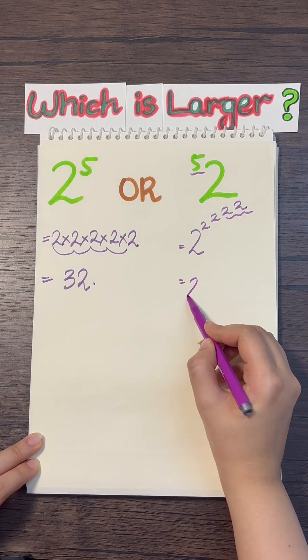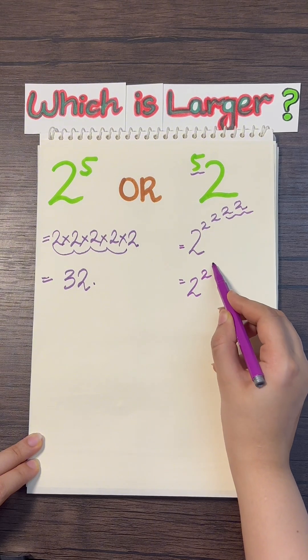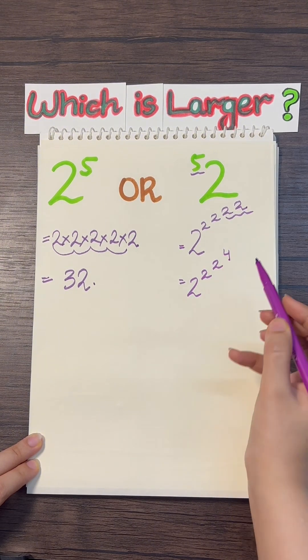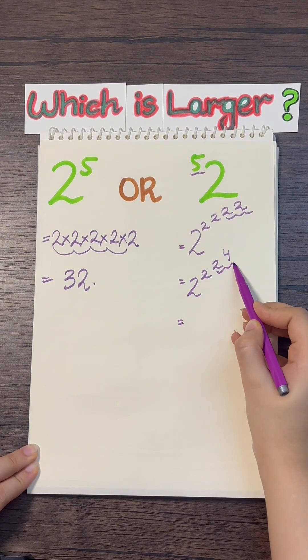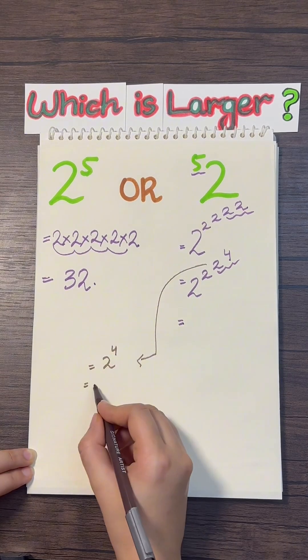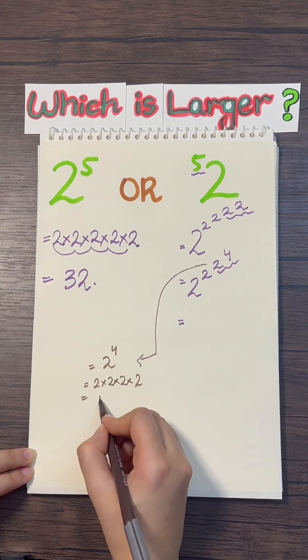2 squared equals 4. So, 2 raised to the 2, raised to the 2, raised to the power 4. Now, what about 2 raised to the 4th power? 2 raised to the 4th power means you are multiplying four 2s, which is 16.